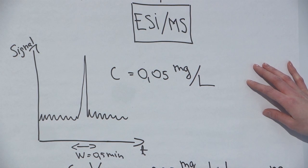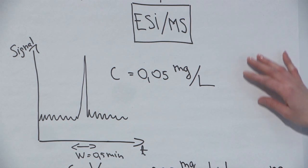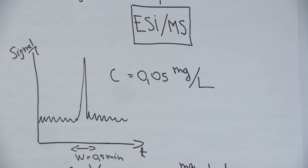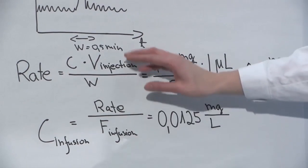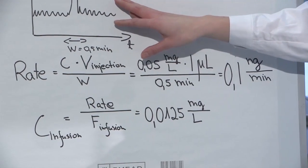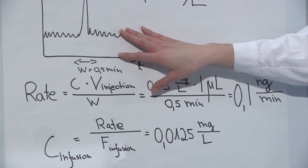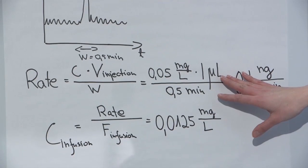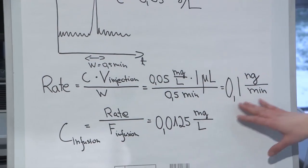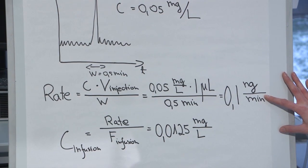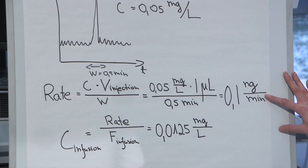First, let's consider what is the analyte rate that is reaching our MS. For this purpose we need to know the medium concentration from the calibration, the injection volume, and our peak width. If we know from previous experiments that our diabendazole peak is about 0.5 minutes wide and our injection volume is 1 microliter, then we know that the rate at which diabendazole reaches the ionization source is about 0.1 nanograms per minute.